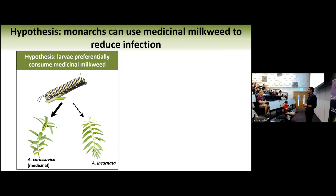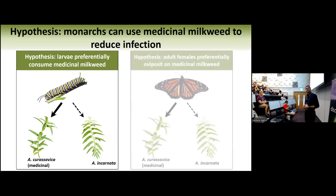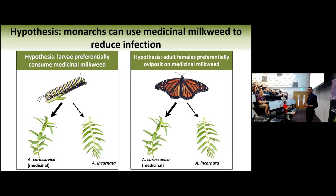I was very interested in whether monarchs can actually use this as a form of medication — if infected, can they specifically use milkweed that reduces parasite infection? We had two different hypotheses. One was that infected caterpillars can eat more of the medicinal plants when given a choice between curassavica (medicinal) and incarnata. The second hypothesis is that it's not the caterpillars but the mothers that make the choices, which is actually more likely because monarch caterpillars are not very mobile — it's really their mothers that put the eggs on the plants.